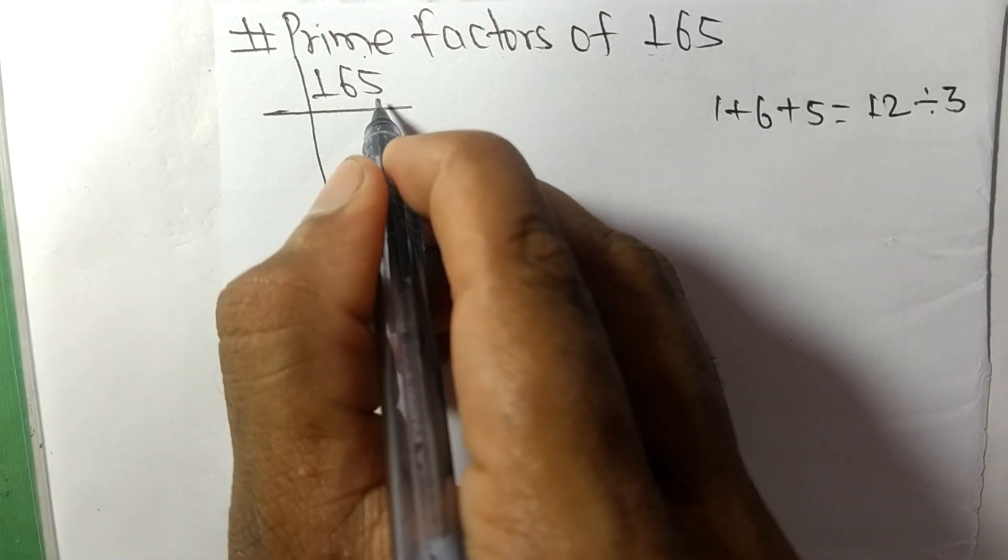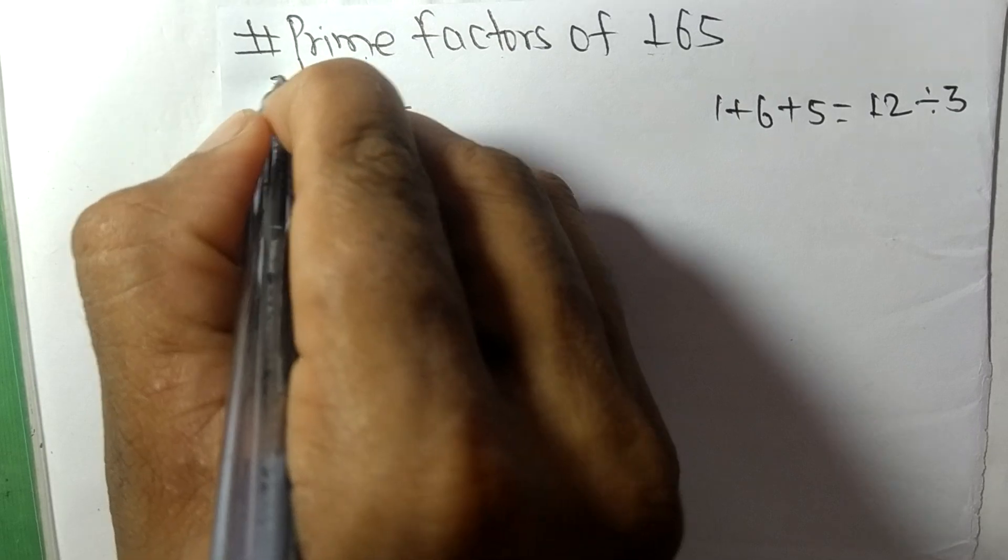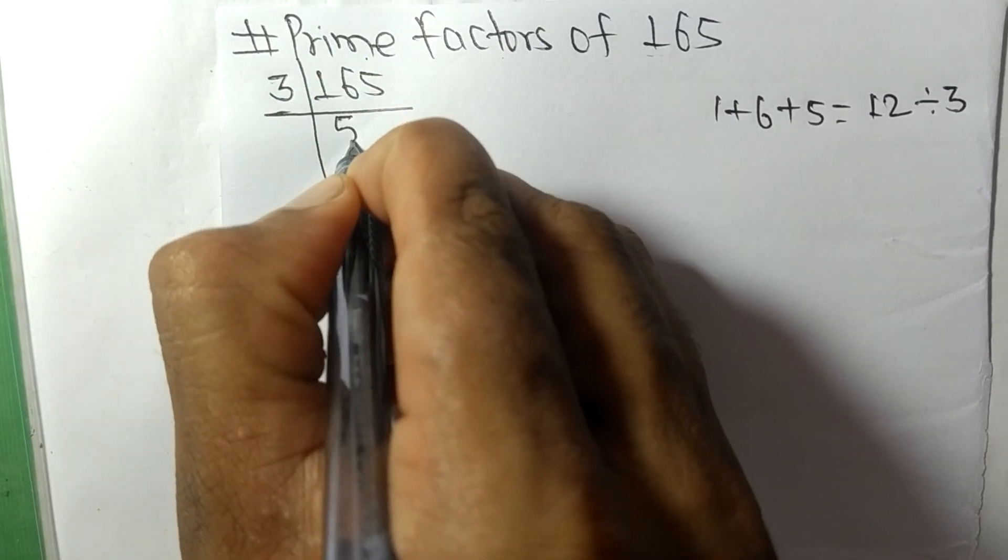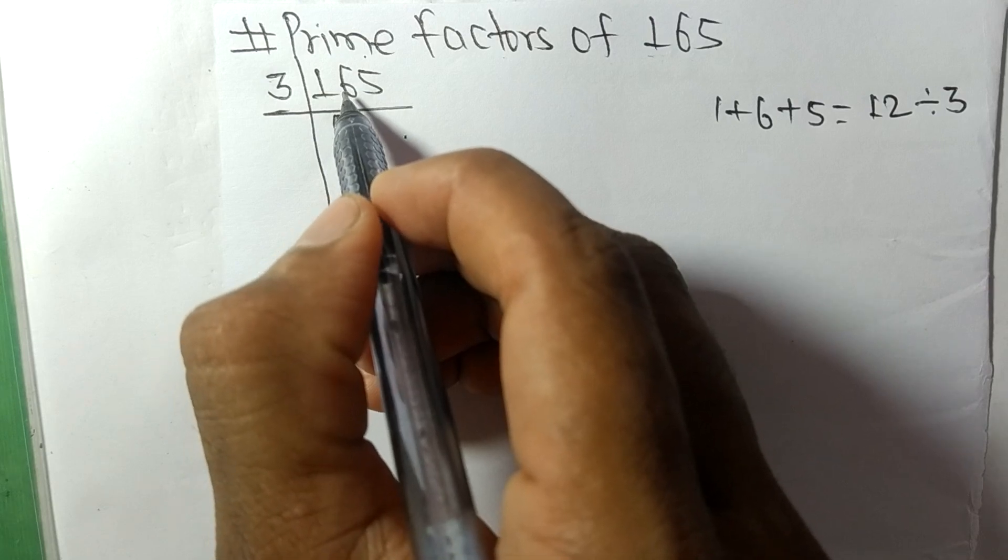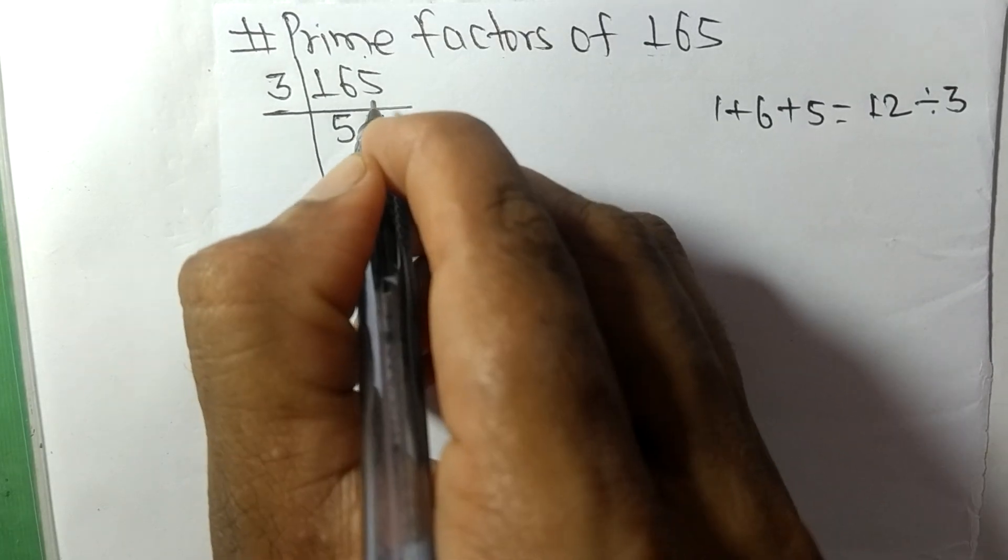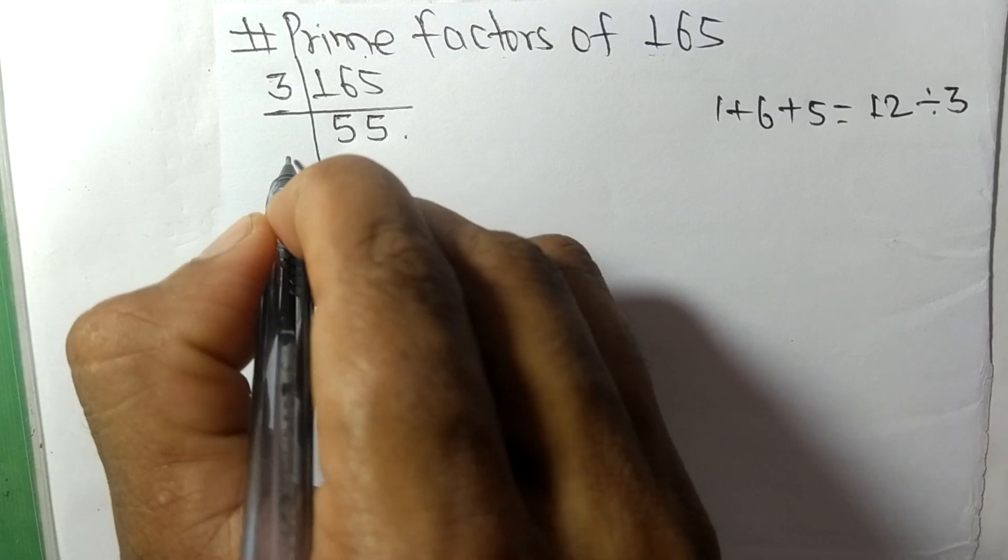165 divided by 3: 3 times 5 is 15, remainder 1, so 1, 5, 15. 3 times 5 is 15. Now we have 55.